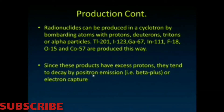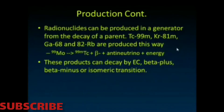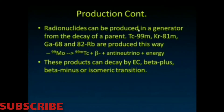In general, some of the smaller ones tend to undergo a bit more positron emission, and some of the larger ones a bit more electron capture — that's just a general rule of thumb. Radionuclides can also be produced in a generator, and that's how we get most of our technetium-99m: we get molybdenum-99 and as it decays, it decays to technetium-99m.